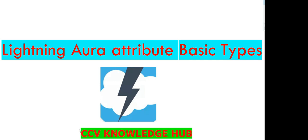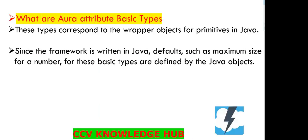First we will see what basic types Lightning Aura attributes will support. These types correspond to wrapper objects for primitives in Java — meaning these are mainly primitive data types. This framework is written in Java, so defaults such as the maximum size for a number for these basic types are defined by the Java objects.